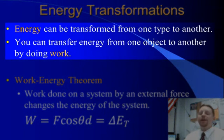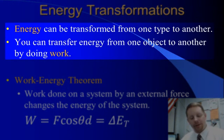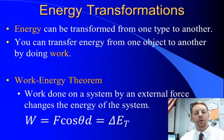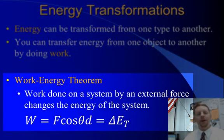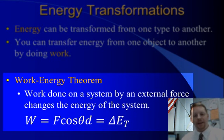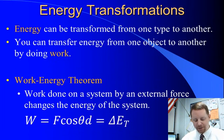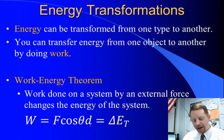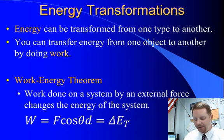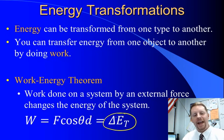Now, energy can be transformed from one type to another, and you transfer energy from one object to another by doing work. So that leads us to the work-energy theorem. This says that the work done on a system by an external force changes the energy of the system. If I do work on an object, I give it energy. If it does work on me, it gives up energy as it transfers that energy to me. And one way to write this is work equals F cosine theta times d, which is equal to the total change in energy of the system.